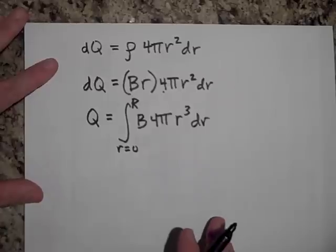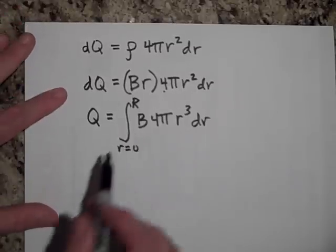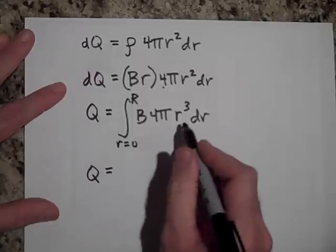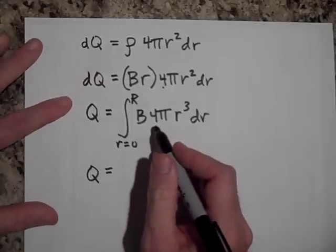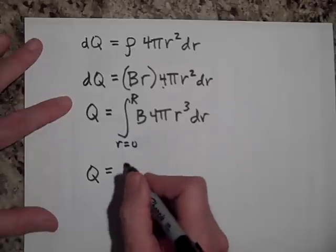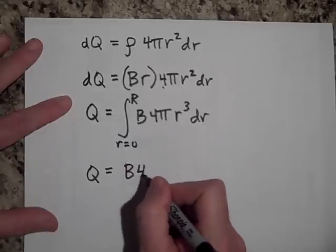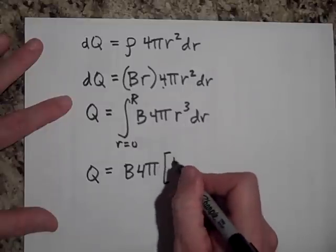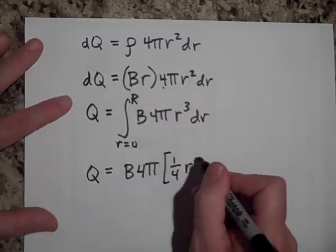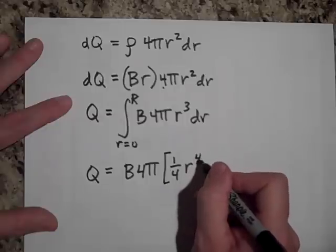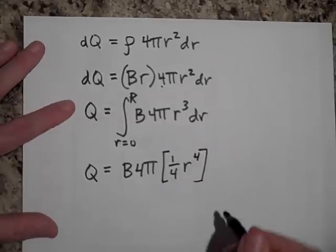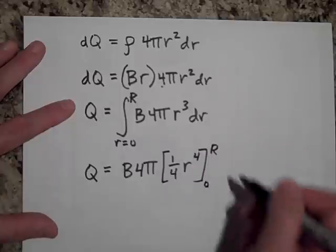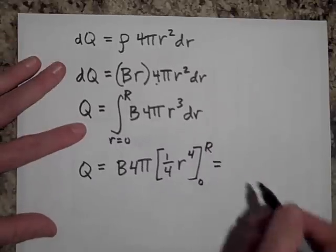So how much charge is enclosed? The total charge enclosed is going to be, I just got to take this integral. So I'll pull the B, the 4 pi, out. And when I take this integral, I get 1 fourth R to the fourth power. And I'm going to bring that, bring a zero here and the R over here.